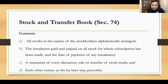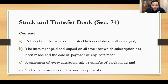The STB would usually contain the following: all stocks in the names of the stockholders, alphabetically arranged. After you have incorporated or registered the corporation with the SEC, the SEC will issue the STB or the Stock and Transfer Book. The STB is where you record all the shares of stocks and the current subscribers of the stock of the corporation. It also records the installment paid and unpaid on all stocks for which subscription has been made and the date of payment of any installment. For unpaid subscriptions, these can be paid on the date specified in the subscription contract or upon the date of call by the board of directors.